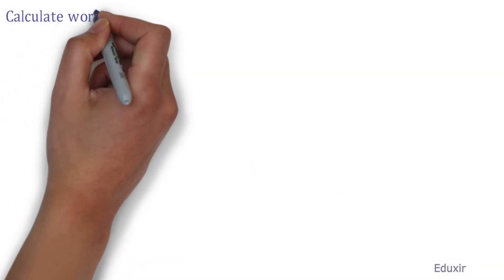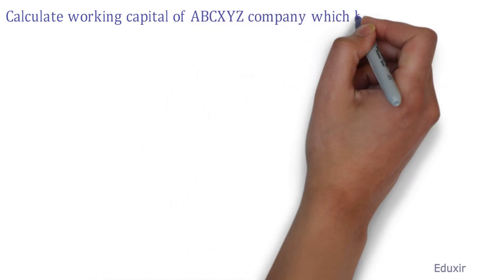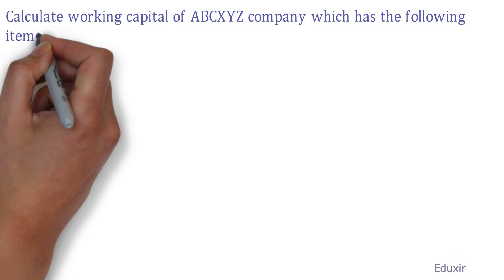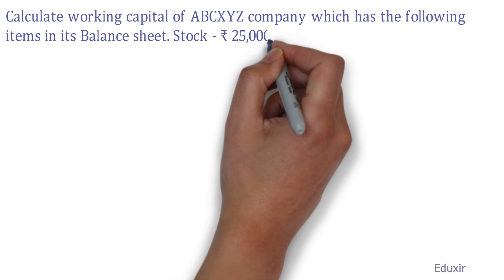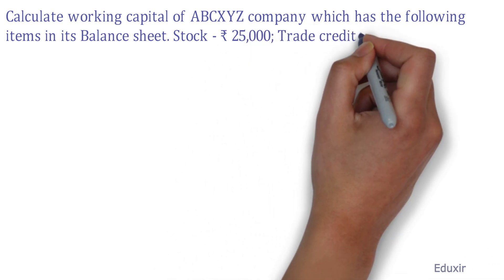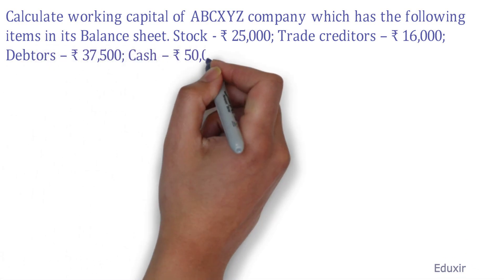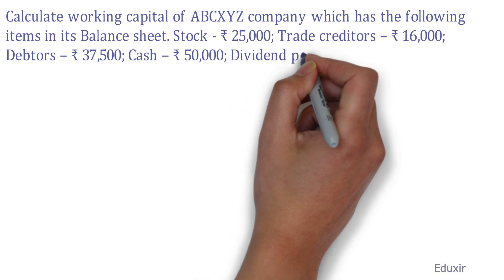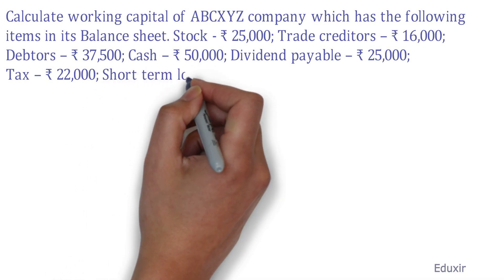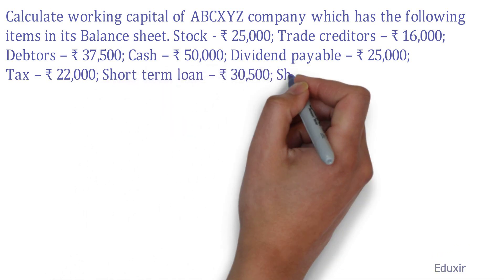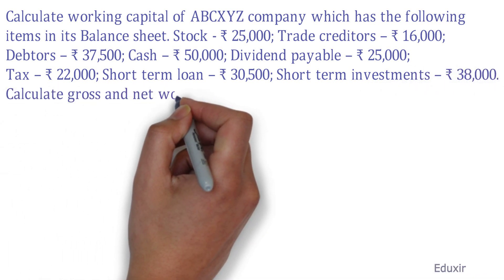We have to calculate the working capital of ABC XYZ company, which has the following items in the balance sheet: Stock Rs. 25,000; Trade Creditors Rs. 16,000; Debtors Rs. 37,500; Cash Rs. 50,000; Dividend Payable Rs. 25,000; Tax Rs. 22,000; Short Term Loan Rs. 30,500; Short Term Investments Rs. 38,000. We have to calculate the gross and net working capital.